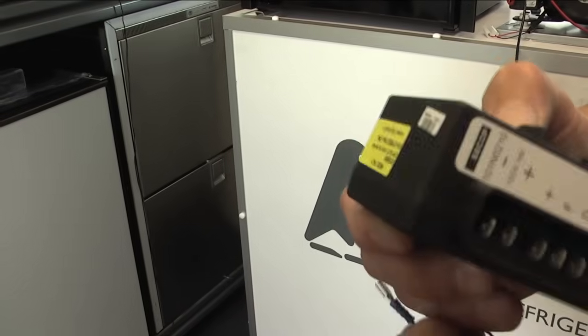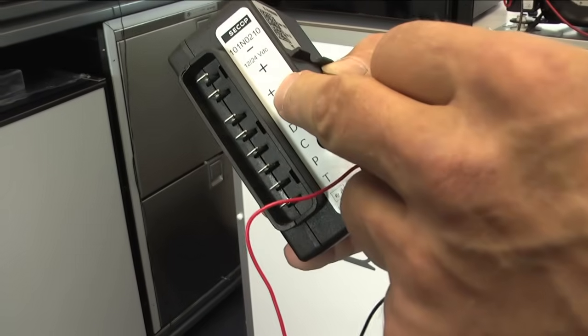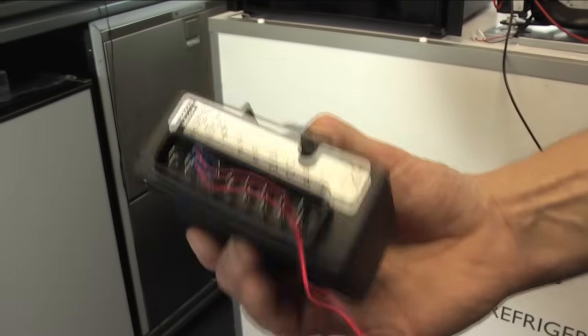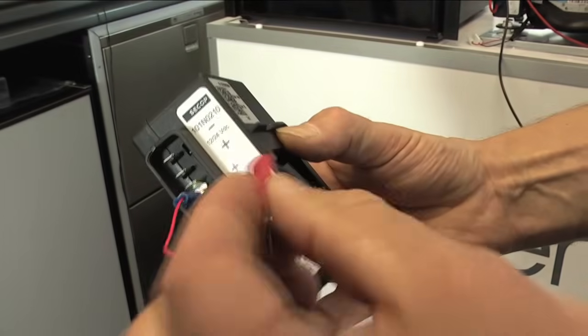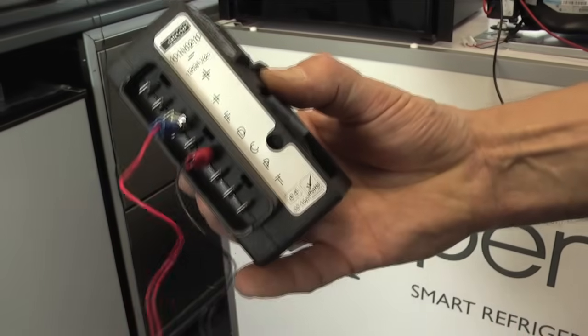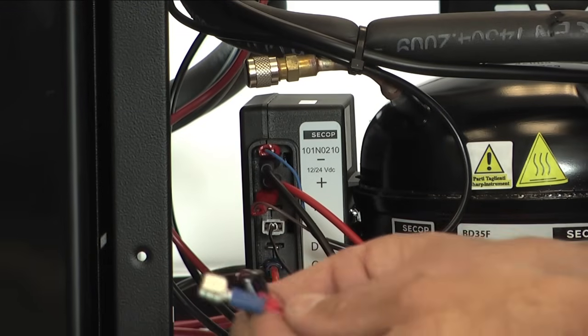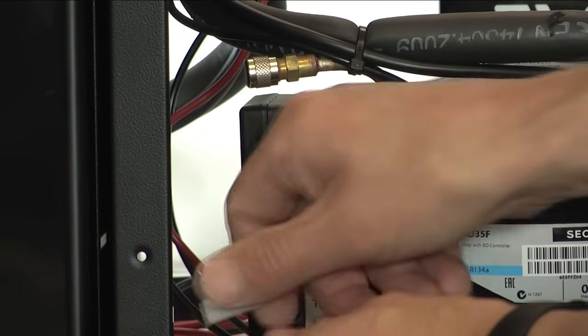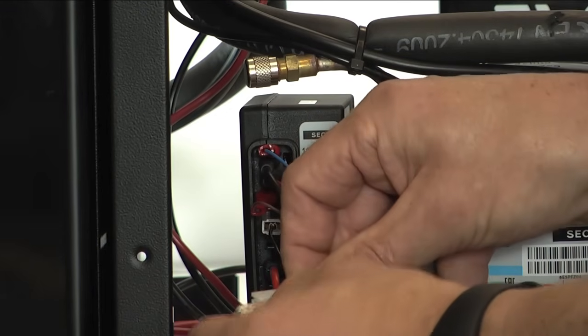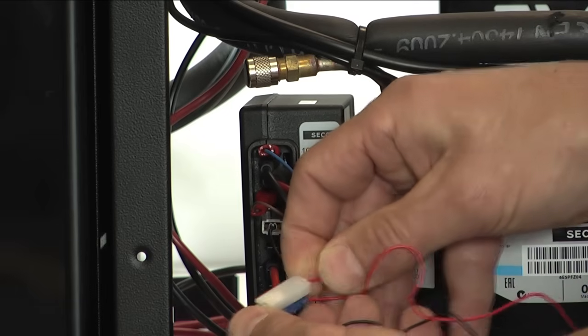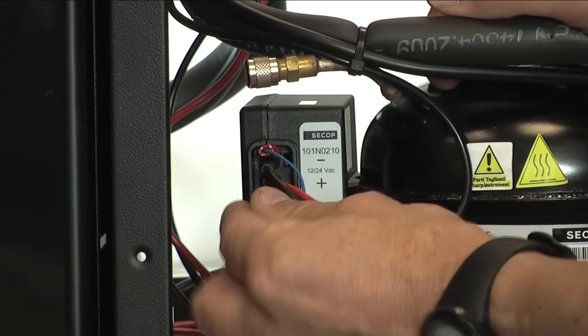So the positive goes on the small plus, which is shared by the fan, and the negative goes on the D for diagnostic. I'm now going to connect the LED onto the problem compressor in the same way, but this time I'm going to add the fan onto the positive of the LED so that we've got everything connected.